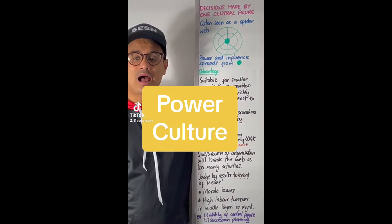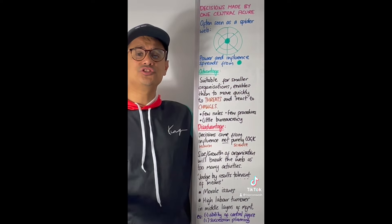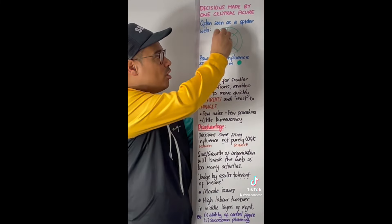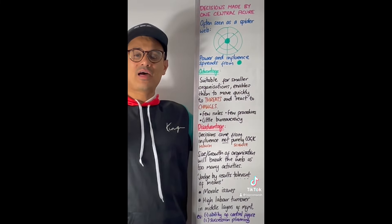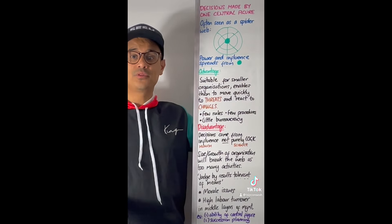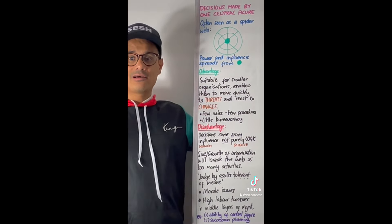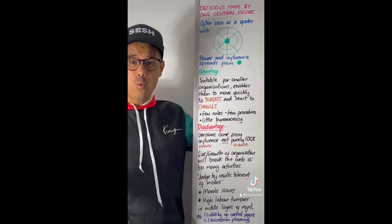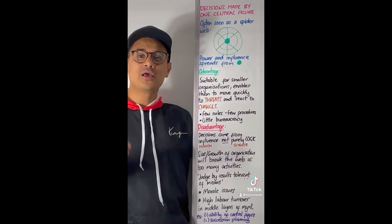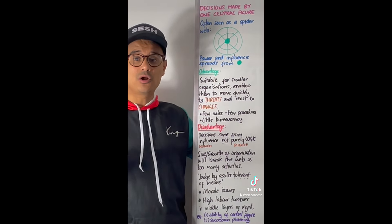Power culture is part of Handy's organisational cultures. Power cultures is when decisions are coming from one centralised figure, the person in the middle of the organisation. That person is where power and influence will exert itself from. Handy saw power culture as like a web, a spider web, and in the middle is where that power and influence comes from.